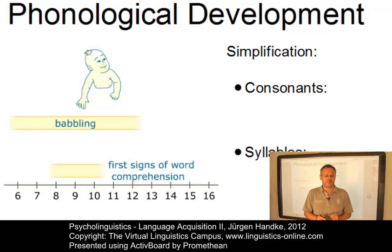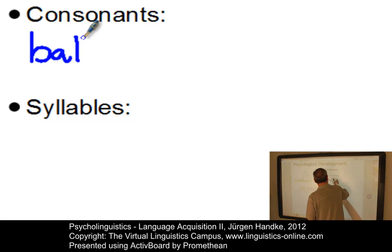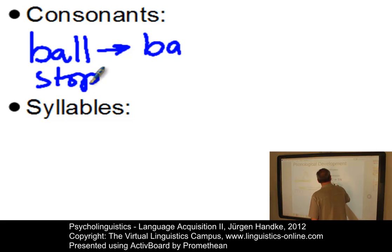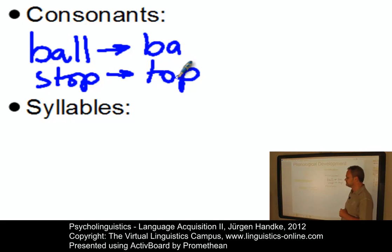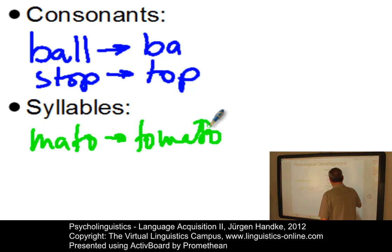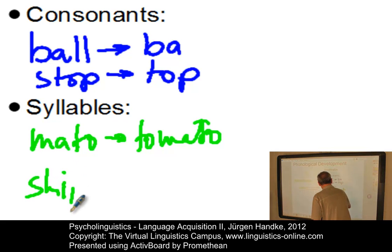As far as consonants are concerned, children often omit the final consonant — so instead of using the word 'ball', they would use something like 'ba'. Or they reduce consonant clusters, such as 'stop', and would use something like 'top' instead. As far as syllables are concerned, children often use elements such as 'mato' instead of 'tomato', so this is a reduction of syllable complexity. Or they repeat syllables such as 'dada'. And often they substitute more difficult sounds with easier ones, so instead of saying 'ship' they would say something like 'sip', a reduction of the onset of a syllable.